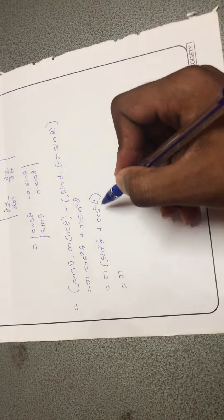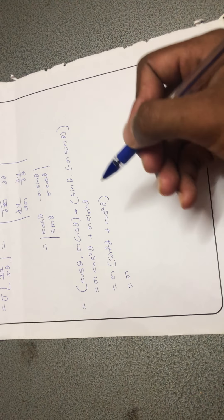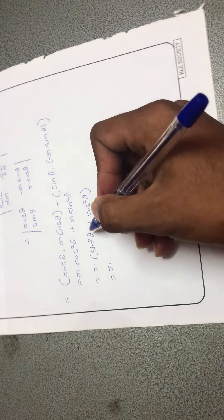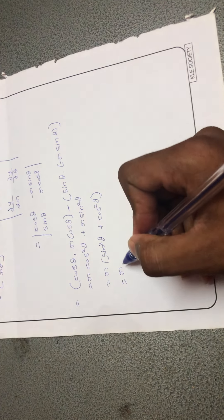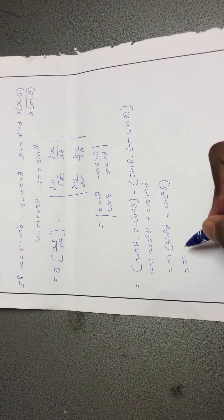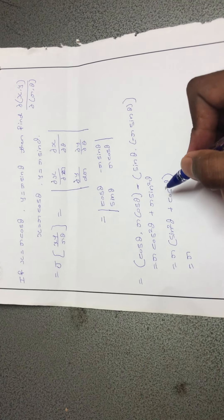The sin square theta plus cos square theta equal to 1, we know in trigonometry, and it became 1. We're left out with r. This is the solution of x equals r cos theta and y equals r sin theta.